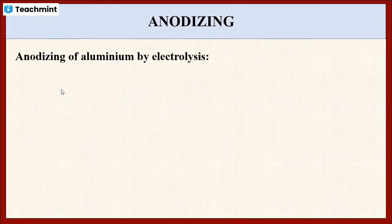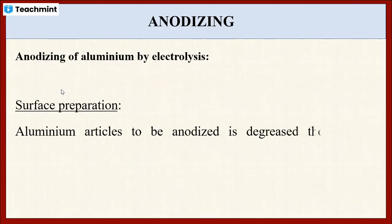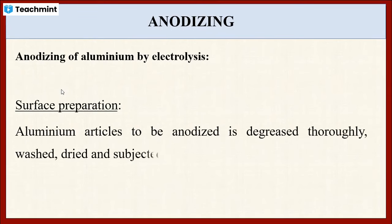Let us see the anodizing of aluminum by the electrolysis method. In this method, the aluminum metal is first polished thoroughly, then washed with water, and finally dried. Only then can we apply the aluminum metal for the anodizing process.